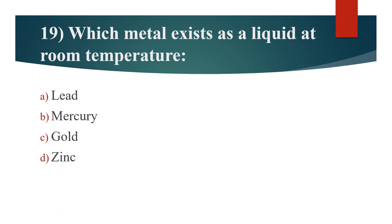Nineteenth question. Which metal exists as a liquid at room temperature? Option A: Lead. Option B: Mercury. Option C: Gold. Option D: Zinc. Answer is Option B: Mercury.